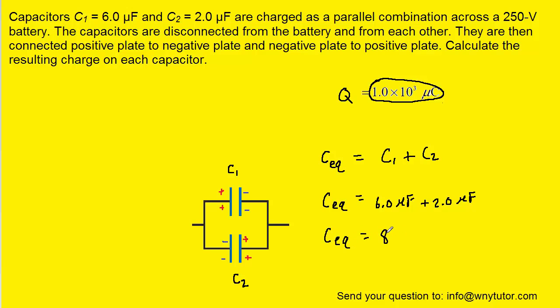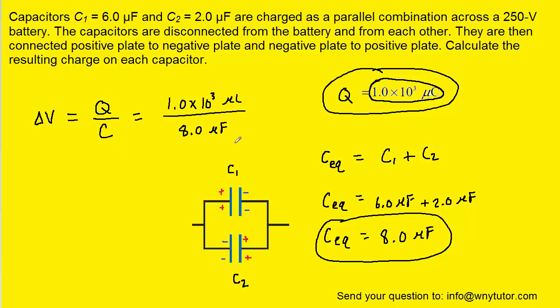And so we can see that the equivalent capacitance is 8.0 microfarads. Now that we have the equivalent capacitance as well as the net charge, we can actually determine the potential difference of this system of capacitors, because we know that potential difference is equal to the net charge divided by the capacitance.